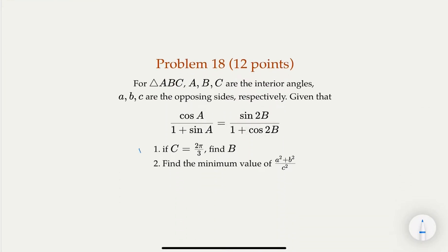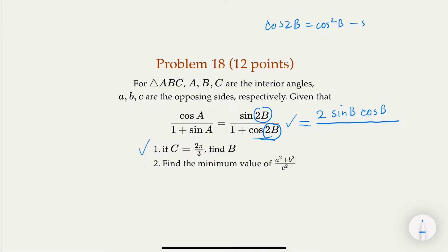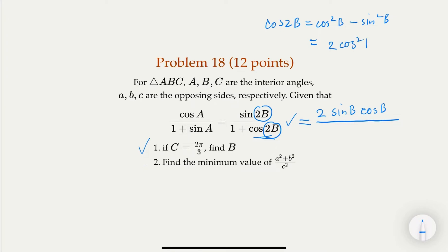In the given equation we have sin(2B) and cos(2B), so we use trig identities to replace them. Sine 2B equals 2 sin B cos B. For 1 + cos 2B, we use cos 2B = 2cos²B - 1, so 1 + cos 2B = 2cos²B.